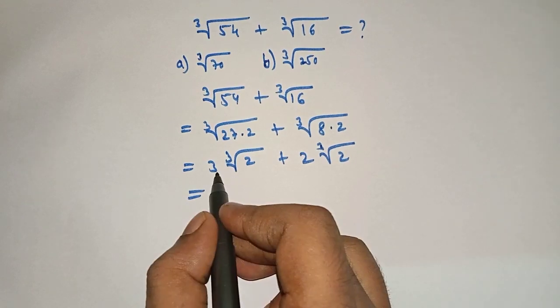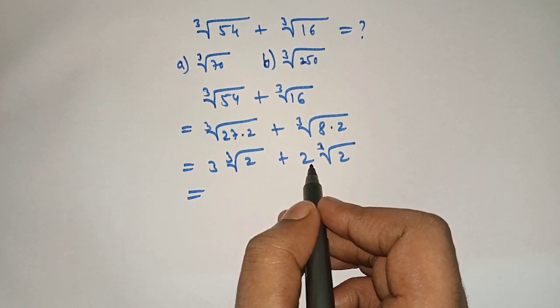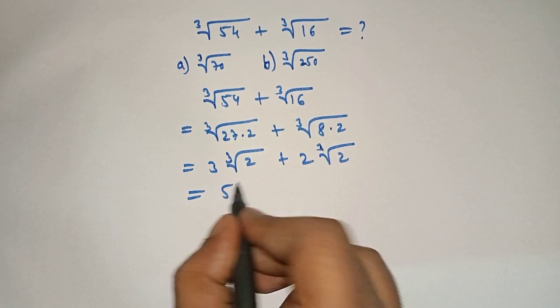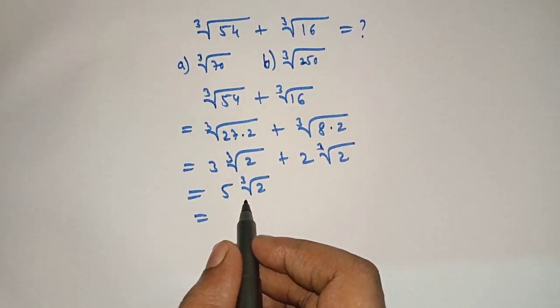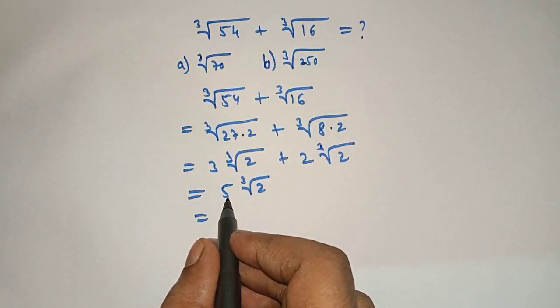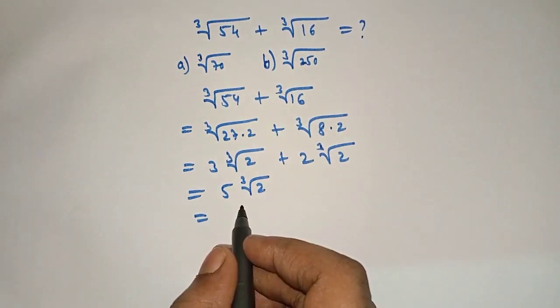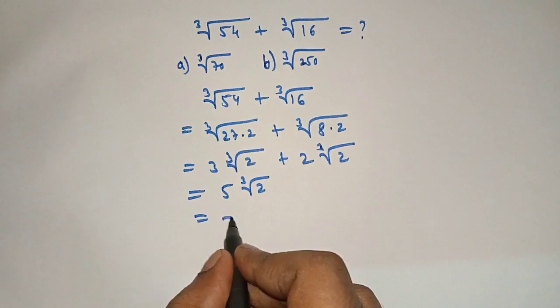Now it will be equal to 3 cube root of 2 plus 2 cube root of 2 is 5 cube root of 2. Now we can take 5 under the cube root. So what we have to do? We have to write cube root of 2.